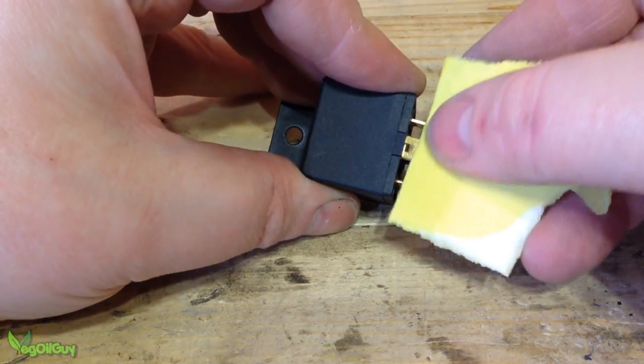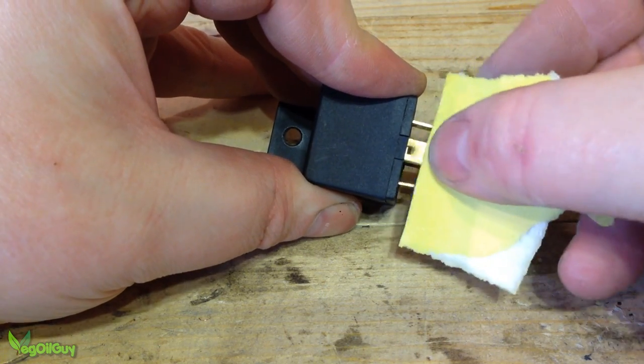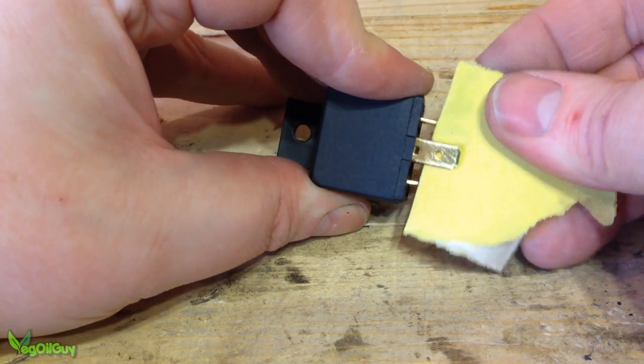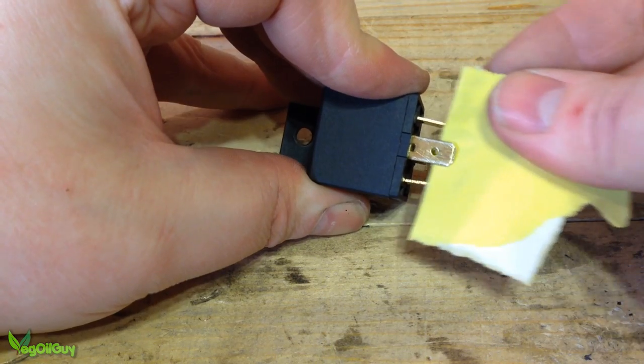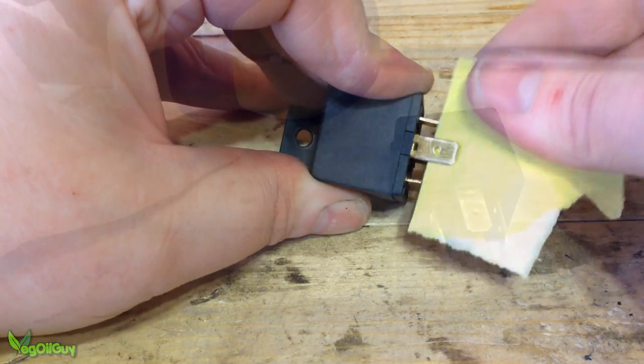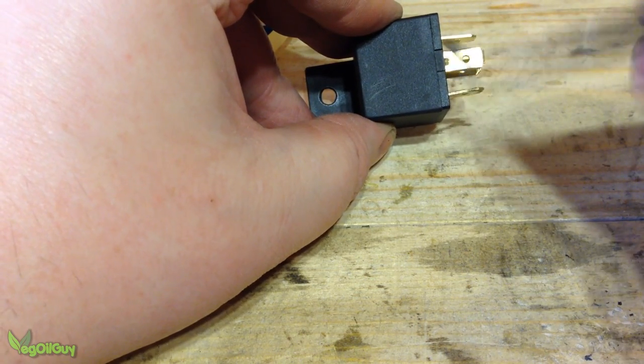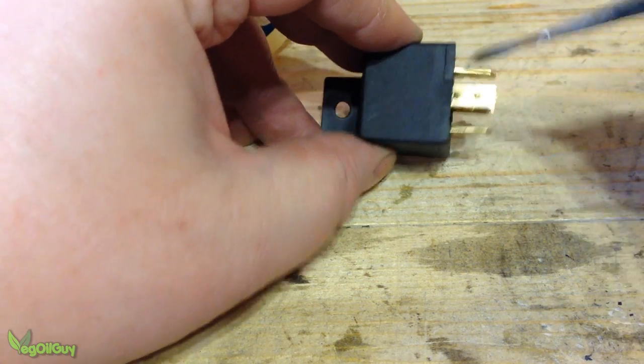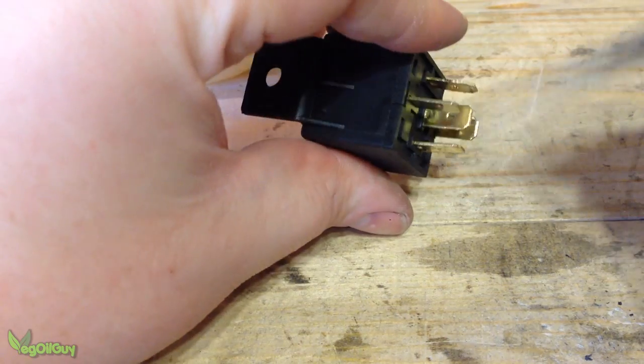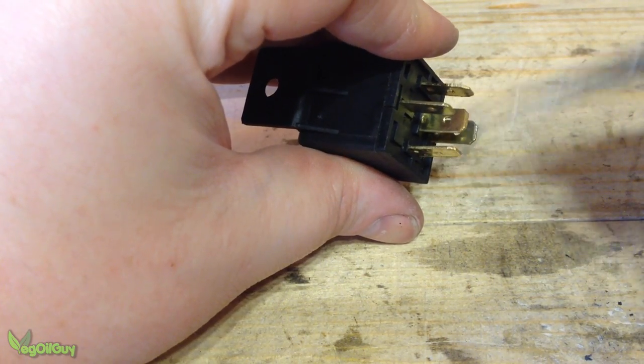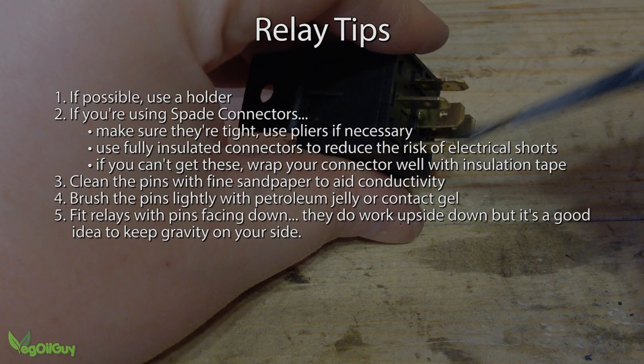Another tip before installation, clean the pins of the relay with fine sandpaper. This aids conductivity and ensures a good electrical connection. Once cleaned, lightly brush the terminals with petroleum jelly. You can use the proper contact jelly if you prefer, but personally I've found that petroleum jelly is just as good at preventing oxidisation, stopping those terminals from getting dirty, which can lead to poor connections and electrical failures. It just takes a few seconds and could save you all manner of troubles in the long run.